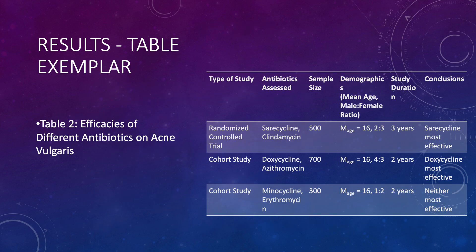Here's an example of a table that summarizes findings: the type of study, the antibiotic assessed, the sample size, demographics, duration, and conclusions. It would also be a good idea to include the outcome measure used — what score they used to show improvement and how much each showed improvement. Include the key information that people are going to want.